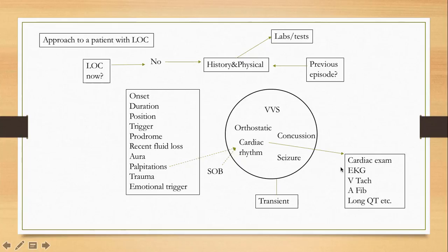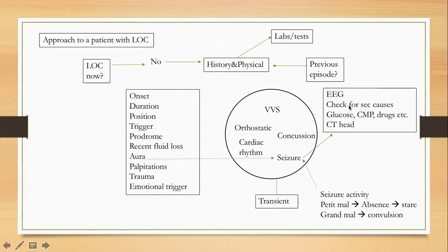If the patient had a seizure based on history, you will do the EEG and check for secondary causes — especially if it was a new-onset seizure and you don't know if it's epilepsy. Drug tests, a metabolic panel, glucose, and a CT scan of the head can and should be done, particularly in an older person with a first seizure. Also keep in mind that young children may develop febrile seizures. A witness can help you determine whether it was a petit mal, absence, or grand mal seizure.